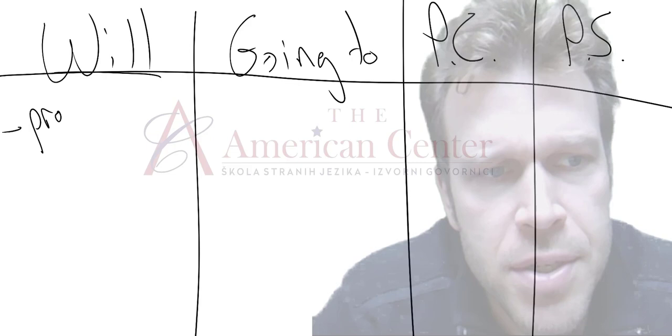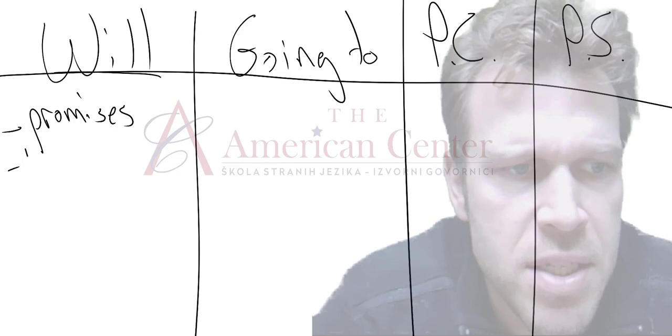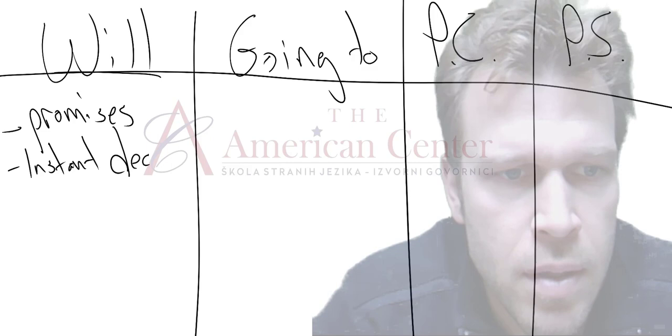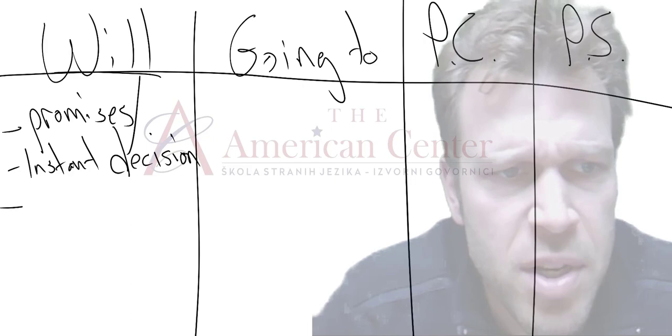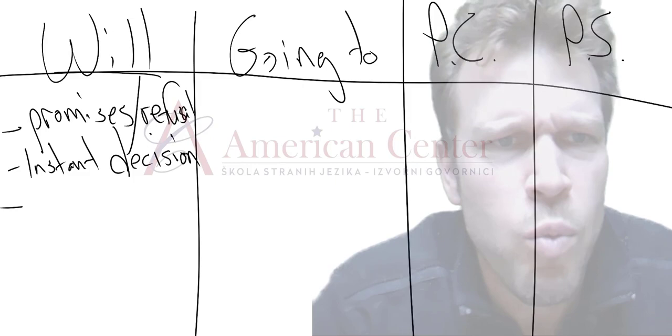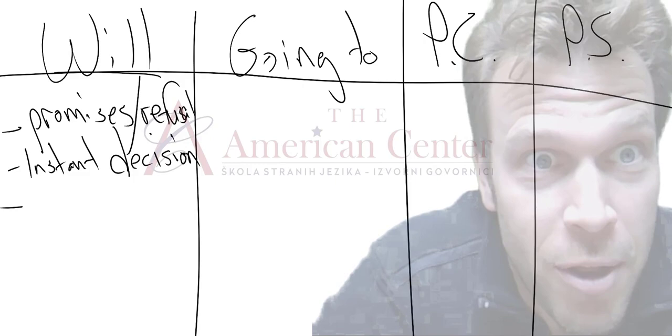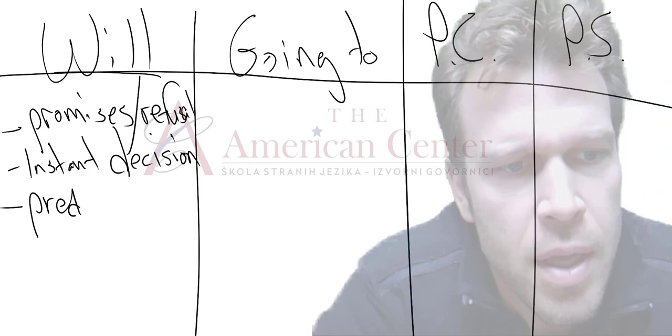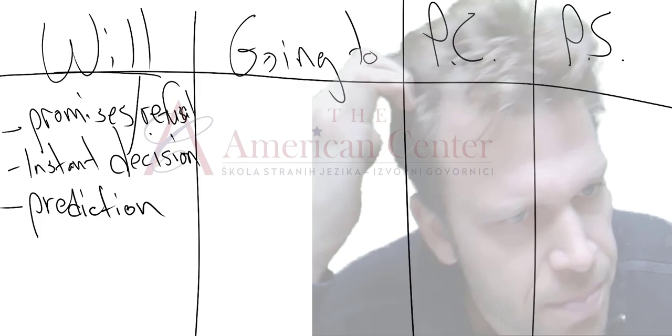We use will for promises, refusals. So, the nature and how we want to think of will is how not to use it. And we do not use it for things that we have contemplated, premeditated and decided. So, we don't use will for things we have decided. Okay. That's number one. So, promises, instant decisions. This is huge. An instant decision. And the opposite of a promise, more or less, we can say a refusal. I hear this all the time for some reason. But refusal. I won't do my homework. Okay. Well, your loss.